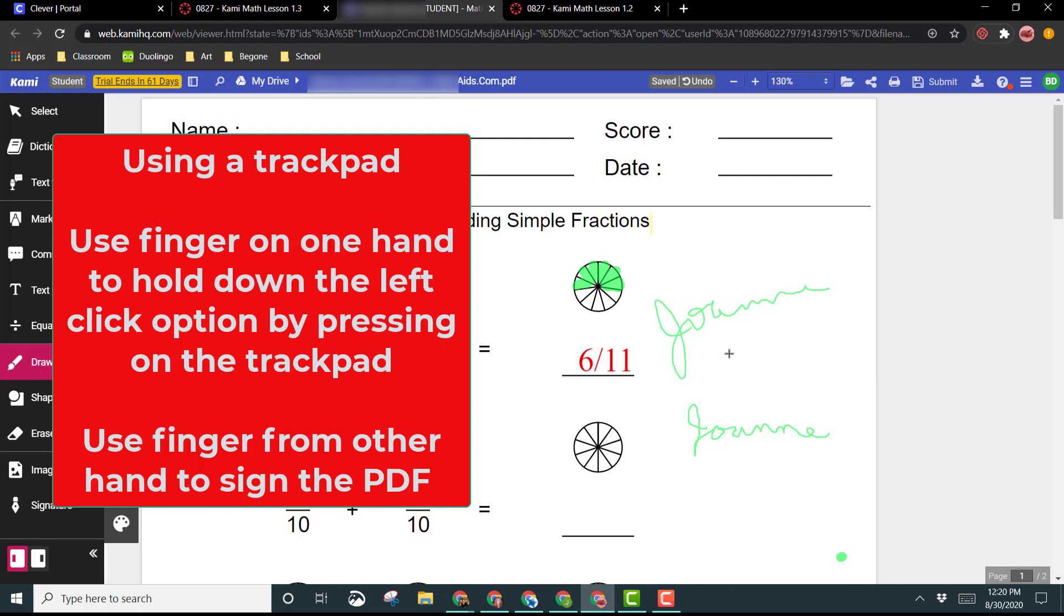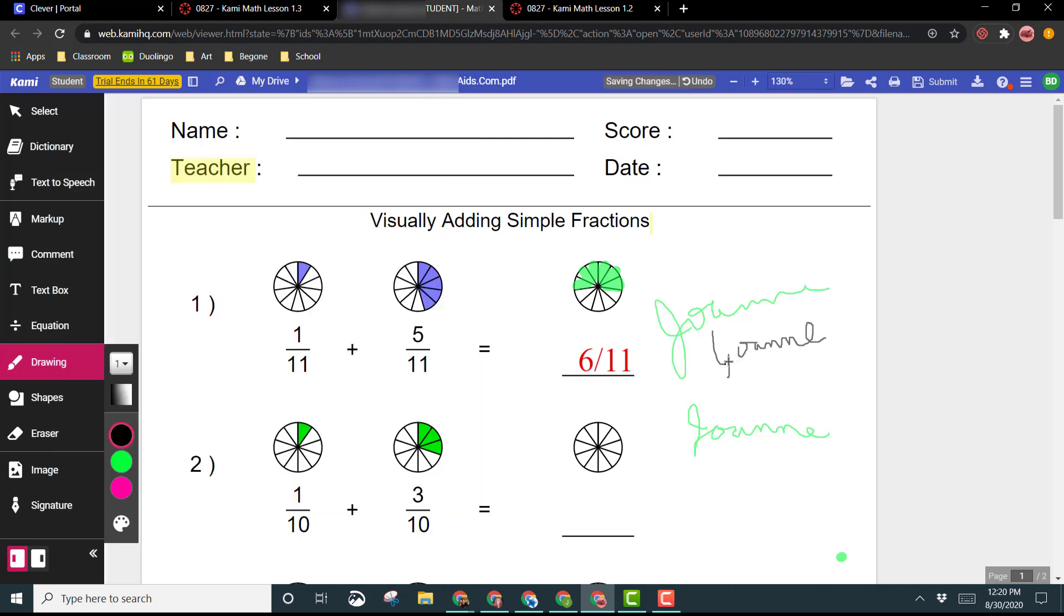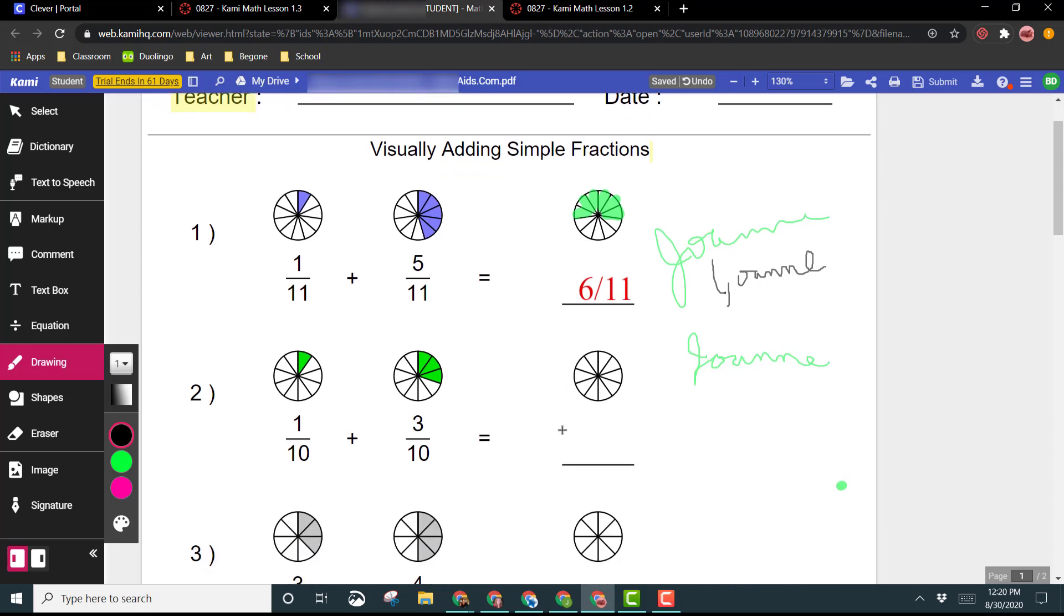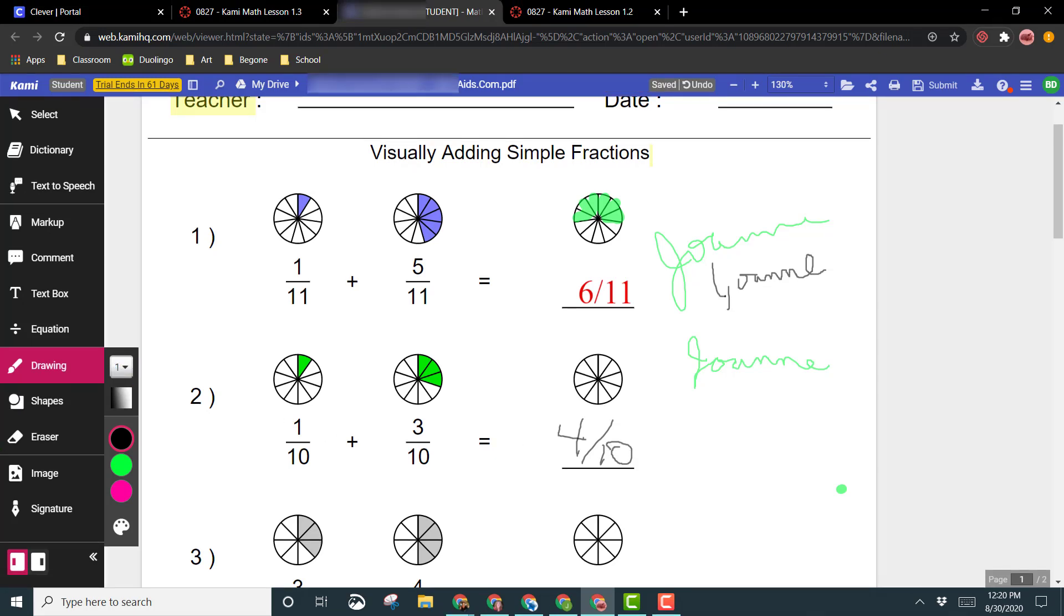So again, with one hand, hold down your trackpad so that the left click is pushed. Then with your other hand, use one of your fingers and draw your signature. So as you can see, it's not as great, but I can still somewhat recognize my signature on there. So there is a way that you can just handwrite on your annotations as well using that drawing pen. Try it out and you will get better with practice.